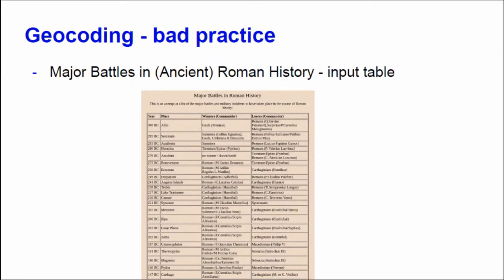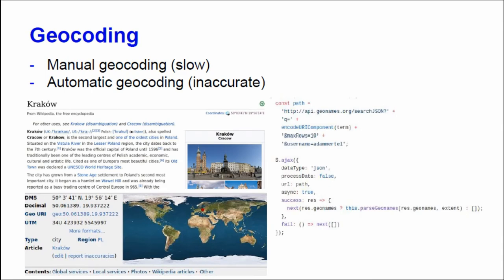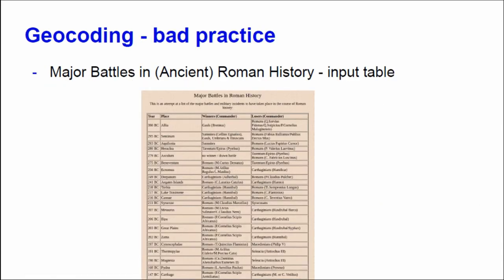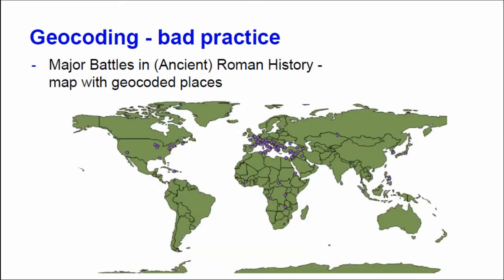I have a practical example to show you. This is a table of major battles in Roman history. I gave this table to my students and asked them to use an automatic geocoder to make a map from it. They had a place name attribute, so they put the table into a script to get coordinates. And this is what I got. I'm not a historian, but I can see some points in the USA, in Indonesia, and so on — clearly not correct.